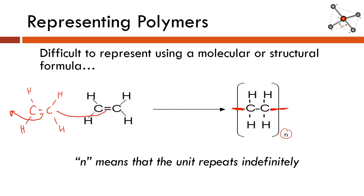This subscript n just means that the unit is repeating itself indefinitely. Of course this has to end at a certain point — it's not going to go on for infinity — but for all practical intents and purposes you might as well think about it that way. It does not matter how many times it repeats. The key is what is the repeat unit. It's more important to show what unit is repeating itself than to try to represent the whole molecule.